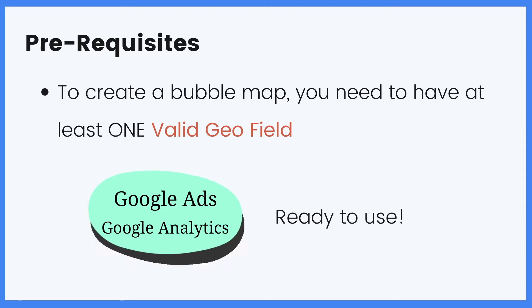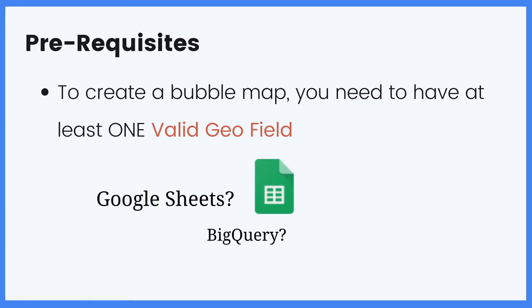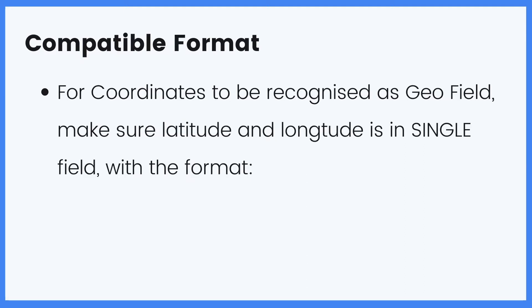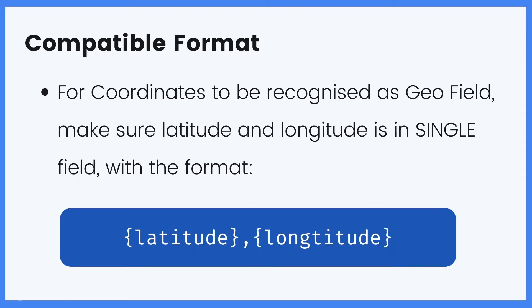If you are using BigQuery or Google Sheets as the data source, you will want to make sure that the selected geographic fields use the compatible format and data types. In case you are unsure, this is the compatible format for draw coordinates to be recognized in Data Studio: first the latitude, followed by a comma, and lastly a longitude.